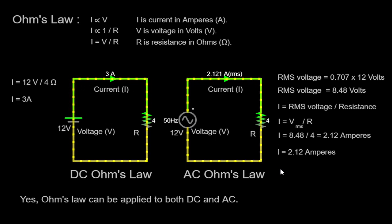Let's begin by examining the DC circuit on the left. Ohm's law is a fundamental principle in electronics that states the current flowing through a conductor between two points is directly proportional to the voltage across those points and inversely proportional to the resistance. In mathematical terms, Ohm's law can be expressed as I = V / R, where I represents the current in amperes, V represents the voltage in volts, and R represents the resistance in ohms.